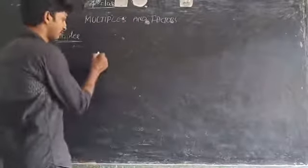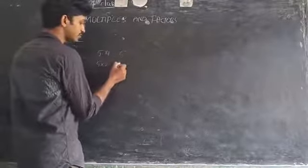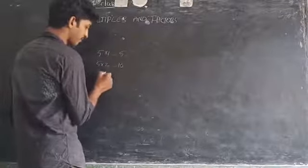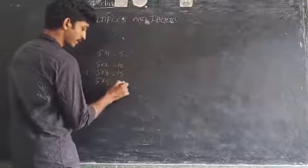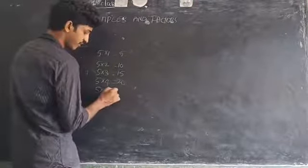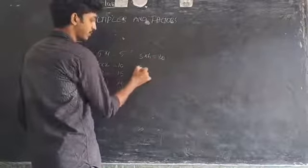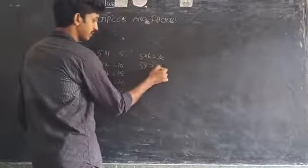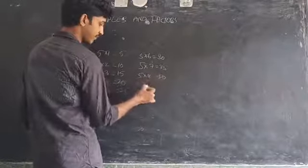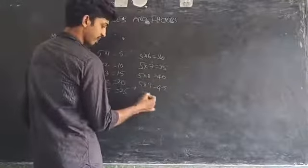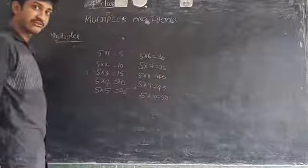Now let's look at the five times table. 5 into 1 is 5, 5 into 2 is 10, 5 into 3 is 15, 5 into 4 is 20, 5 into 5 is 25, 5 into 6 is 30, 5 into 7 is 35. If you observe this table, these are the multiples of 5.